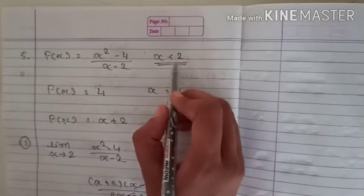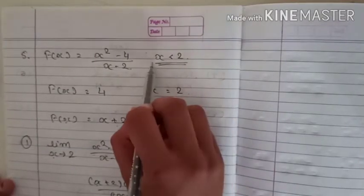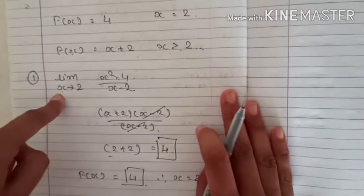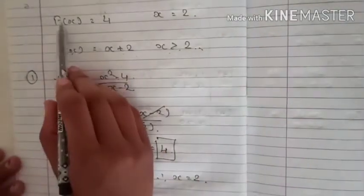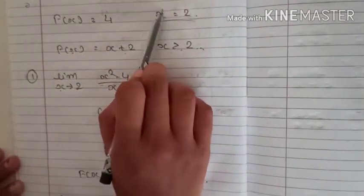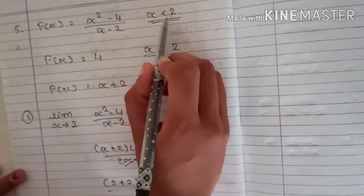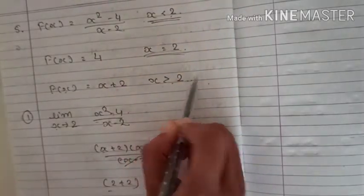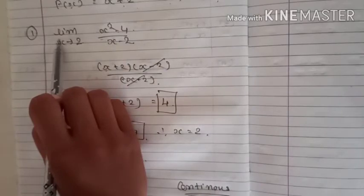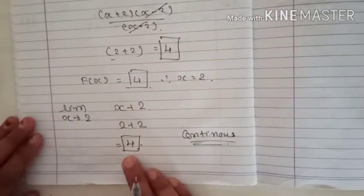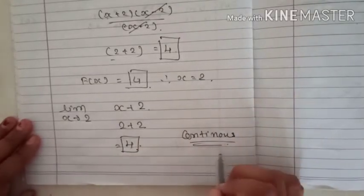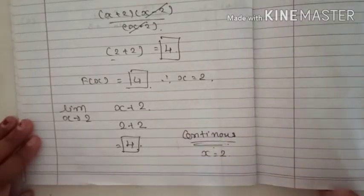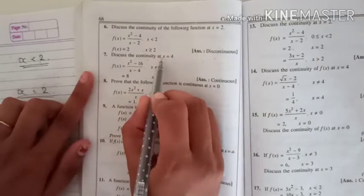To summarize: whenever x is less than or greater than the given value, you find the limit as x tends to that value. When f(x) at a specific point is directly given, you use it as is. Since all three answers are equal — 4, 4, 4 — the function is continuous at x = 2.